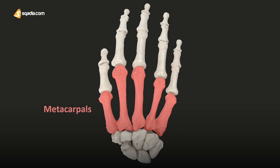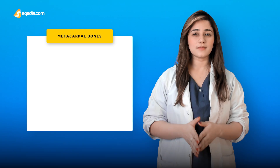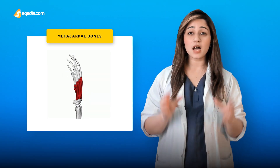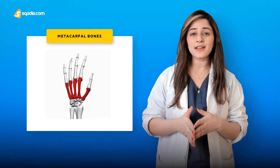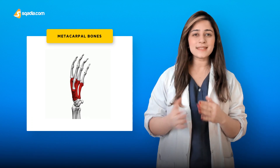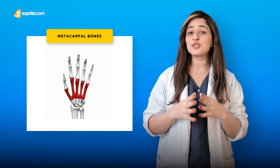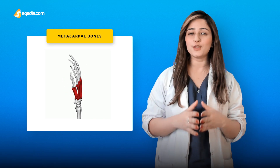The metacarpals are a group of five bones in the hand that lie between the phalanges of the fingers and the carpal bones of the wrist. They form the intermediate part of the hand that forms the connection to the forearm. The metacarpal bones are small, yet they are classified as long bones, because they have the structural characteristics of long bones.